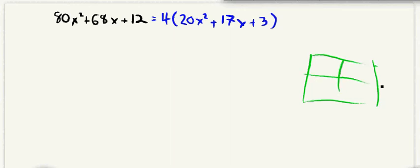And in the upper left-hand corner here, we're going to put our first term. So that 20x squared is going to go right there. And then our last term is going to go here. So we're going to put our three here.